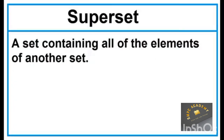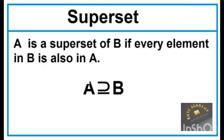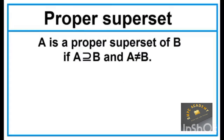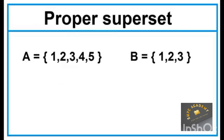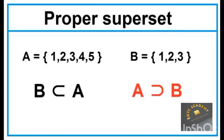Superset: a superset is a set containing all of the elements of another set. In symbol, Set A is a superset of Set B. This is just a reverse of subset. Proper Superset: Set A is a proper superset of Set B if Set A is a superset of Set B and Set A is not equal to Set B. While Set B is a proper subset of Set A, Set A is a proper superset of Set B.